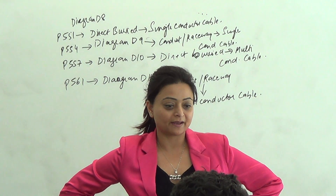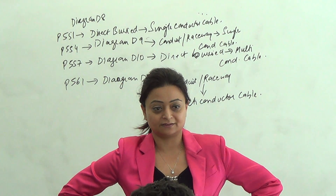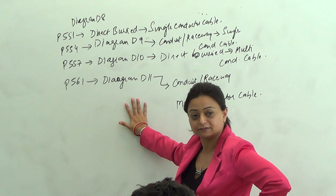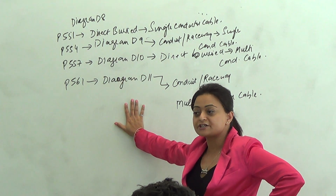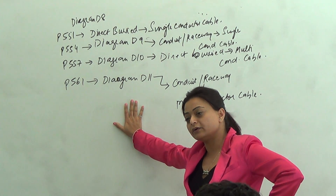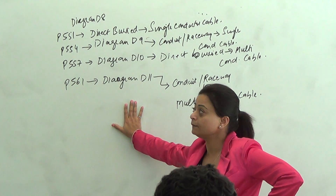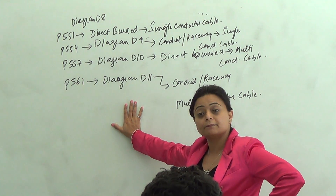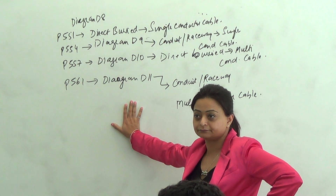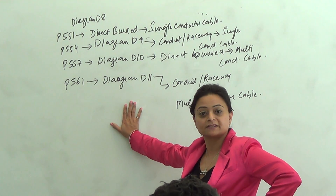Alright, let's see why it's a troublemaker. I'm going to repeat what these diagrams and cables are. The question may sound like: while I'm installing an underground wire, the load of this building is 1000 amps. The conductor I'm putting is directly buried and it's a single conductor cable and the load is 1000 amps.